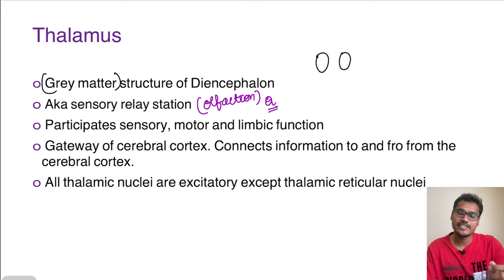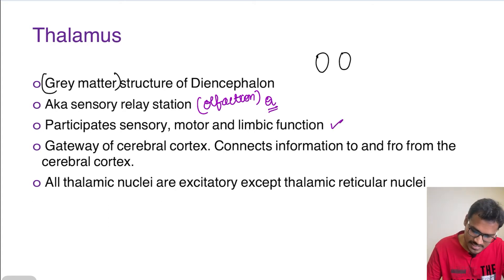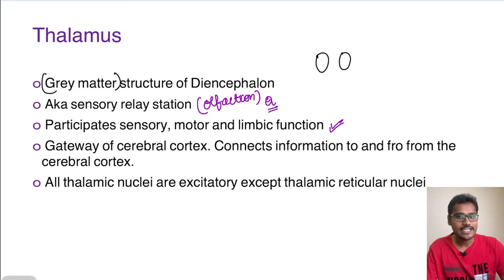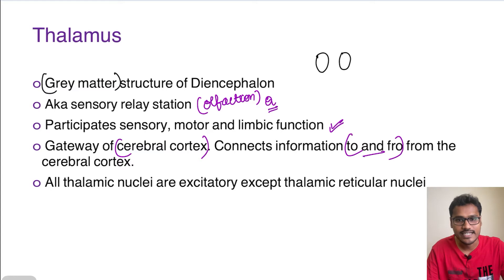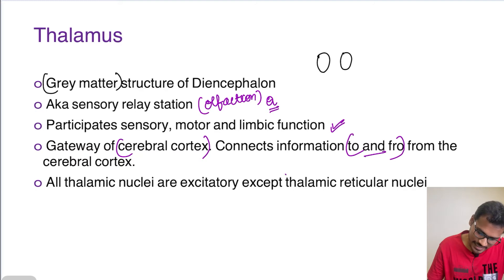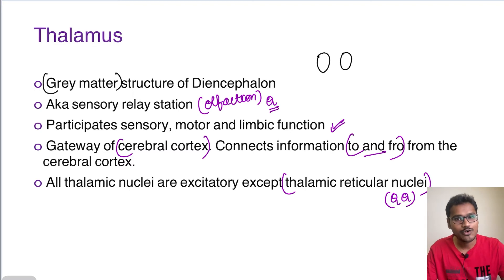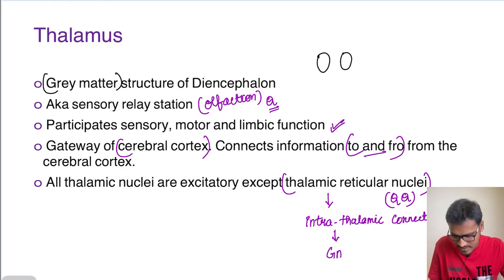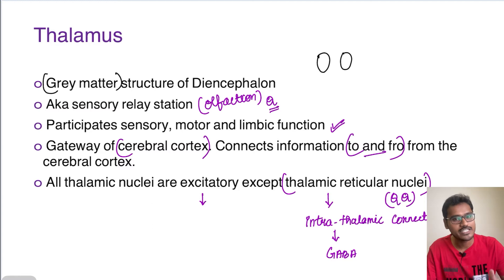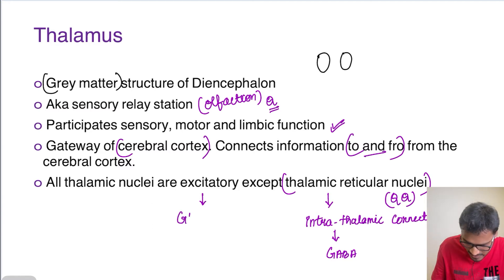The thalamus also participates in receiving sensory information and helps in motor functions as well as limbic functions. It is rightly called the gateway of the cerebral cortex. It not only gives impulses to the cerebral cortex but also receives information from the cerebral cortex — a to-and-fro connection. All thalamic nuclei are excitatory except for the thalamic reticular nuclei, which is an MCQ-worthy exception. The thalamic reticular nucleus is the only inhibitory nucleus; it does not project out of the thalamus but forms intrathalamic connections, releasing GABA. The excitatory neurotransmitter in all other nuclei is glutamate.